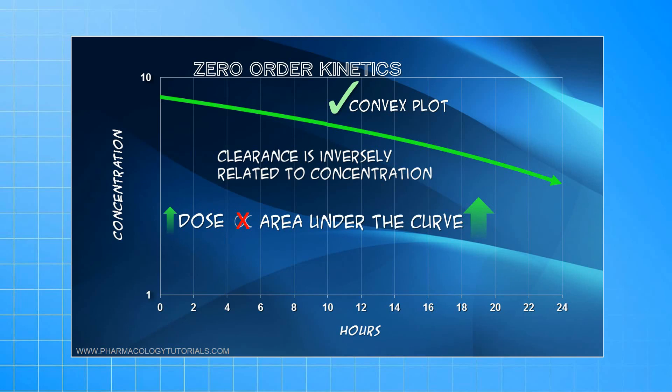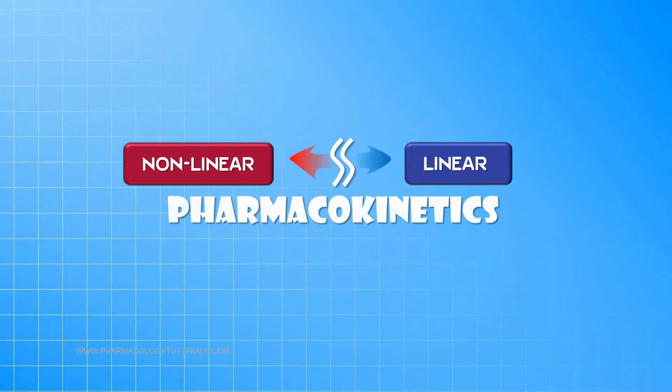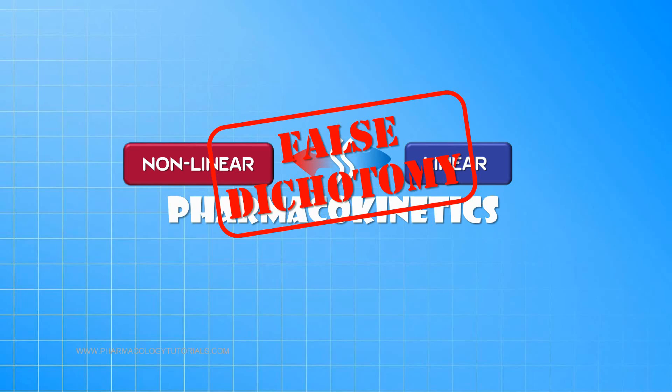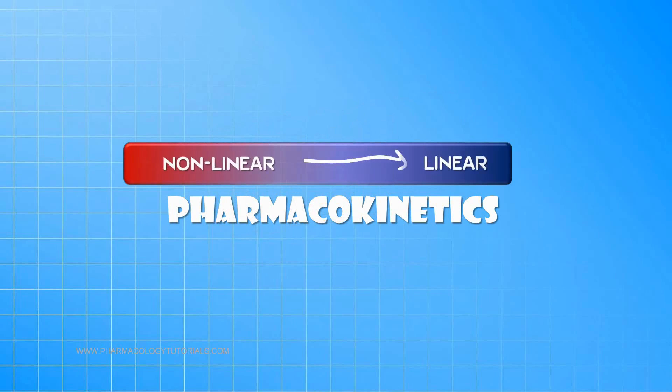In most textbooks, the linear and non-linear pharmacokinetics are presented as if they are alternate realities. Actually, not unlike what I've just shown you. Unfortunately, this is an oversimplification. And it represents a false dichotomy. In reality, linear and non-linear models are merely opposite extremes of the same continuum.